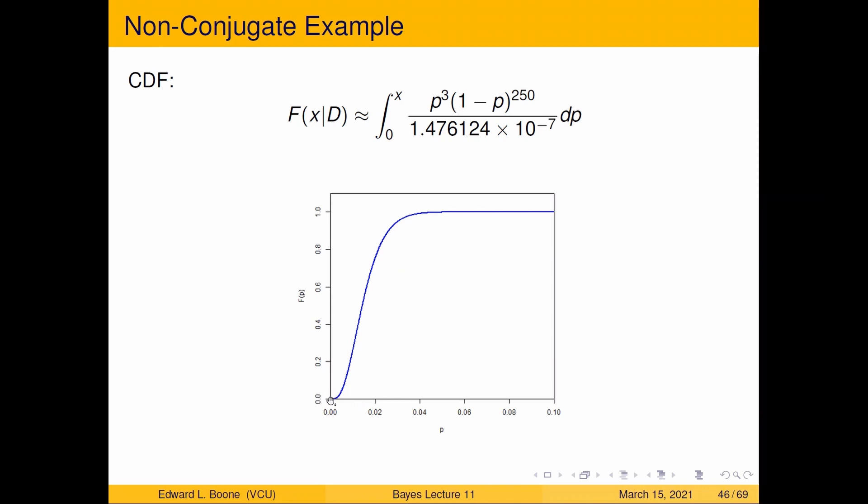Here's what the picture looks like. Goes from 0, plateaus up at 1, goes from 0 to 0.1, because the prior distribution only went from 0 to 0.1.